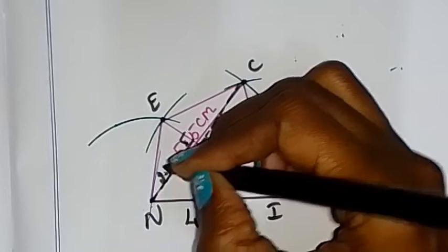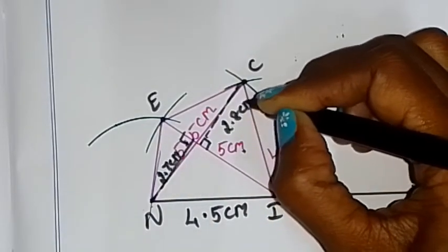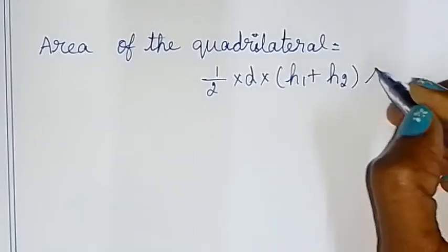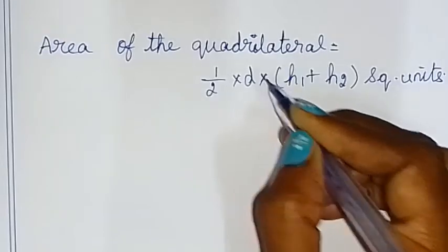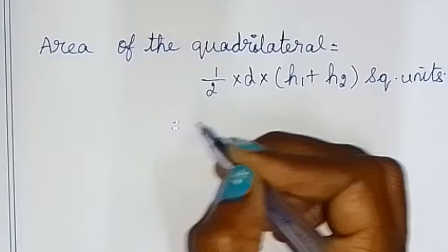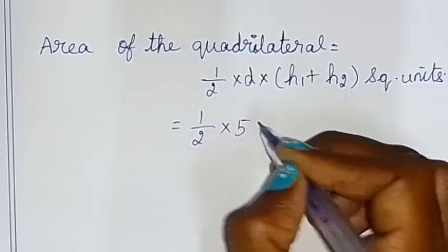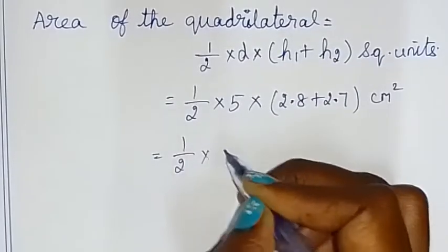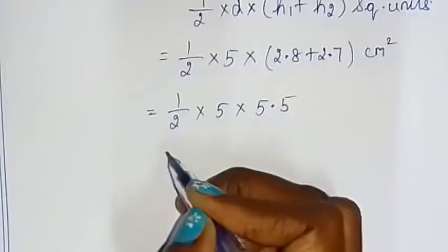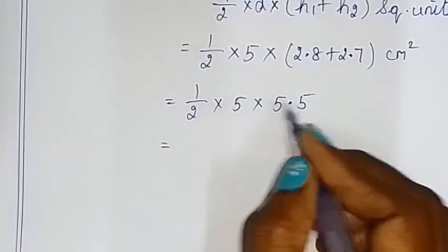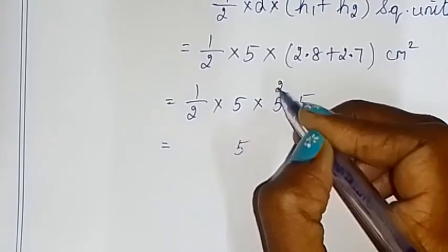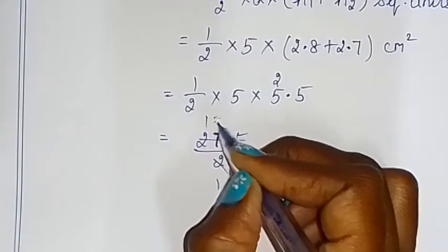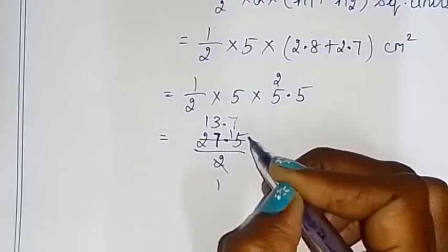The area of the quadrilateral equals half times d times h1 plus h2 square units. The diagonal is 5 centimeters and the heights are 2.8 plus 2.7 centimeters. So this equals half times 5 times 5.5. First multiply: 5 times 5.5 equals 27.5. Then divide by 2: 27.5 divided by 2 equals 13.75 centimeters square. This is our required area.